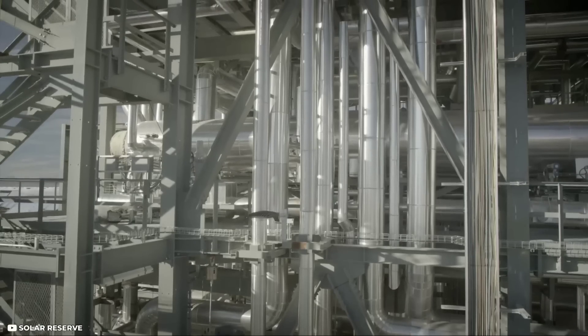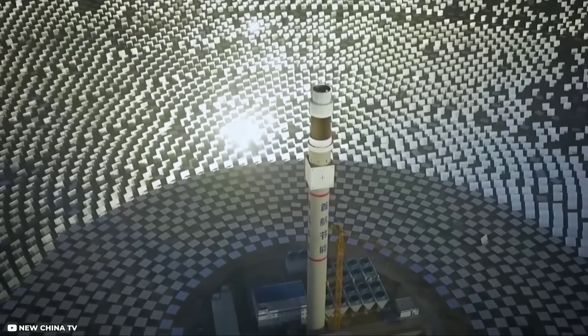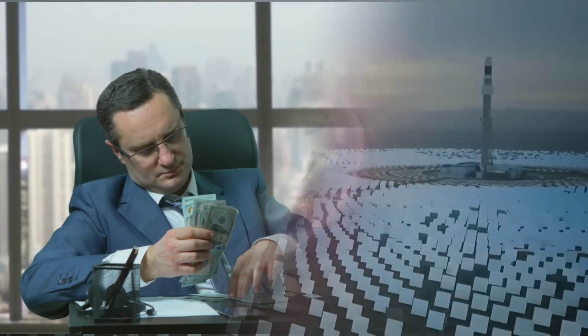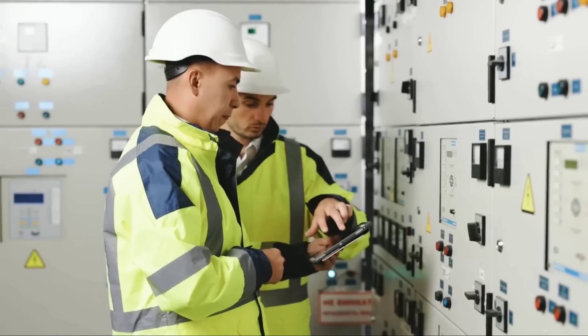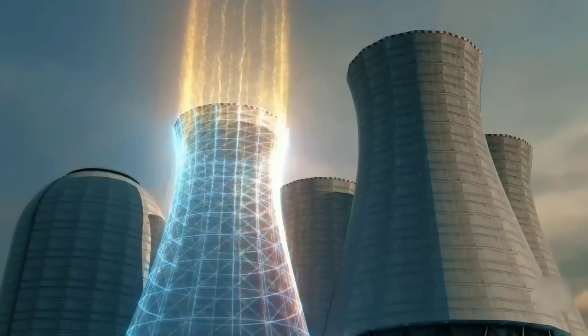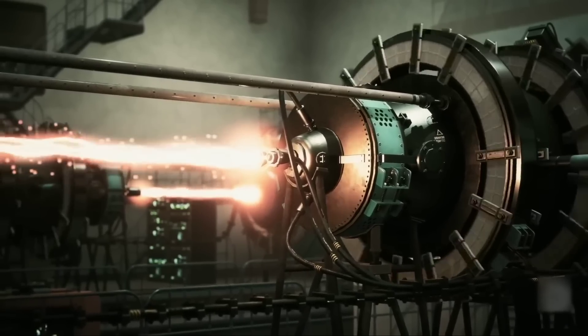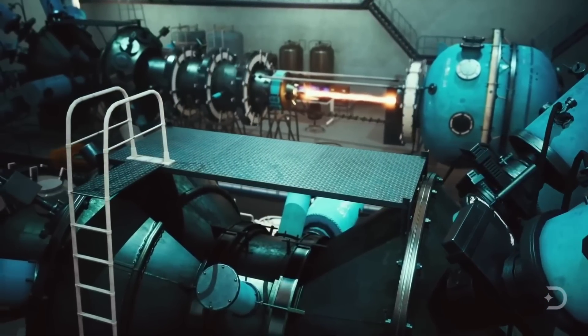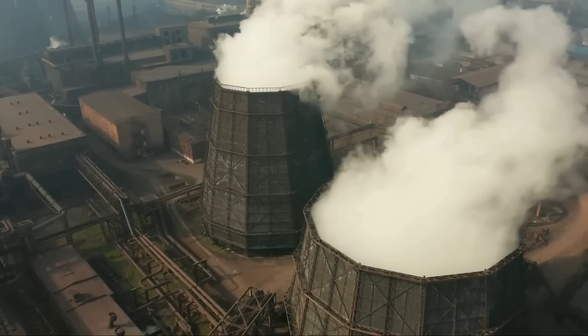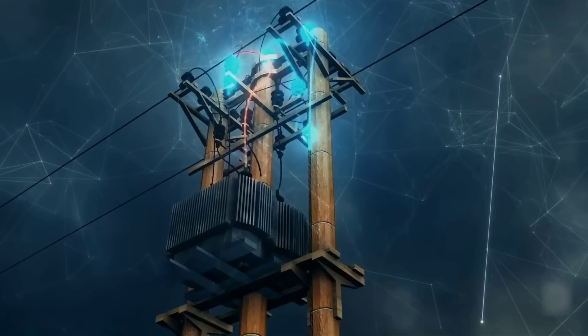Solar energy was becoming cheaper and more efficient, while the plant was costly and complex to maintain. It needed custom parts and a large staff to keep it running smoothly. The plant also had a steep learning curve. It usually takes four years for a new thermal power plant to reach full production, with gradual increases in output each year.